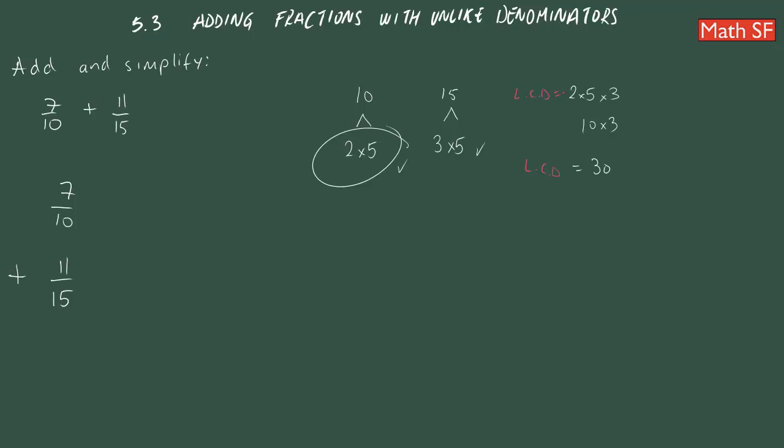Which means we need to convert these denominators to 30. 10 times what gives you 30? 10 times 3. So, you need to multiply by 3 in the numerator and the denominator in order to keep having the same value.